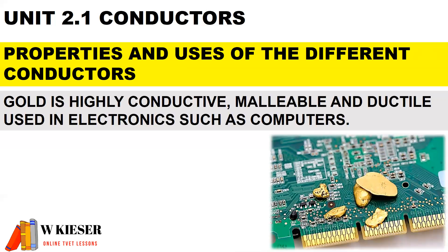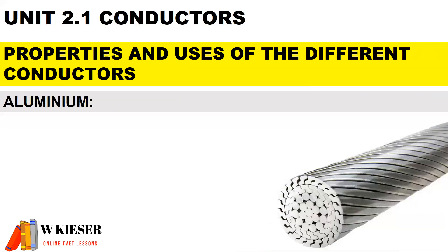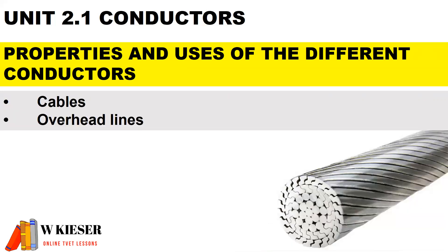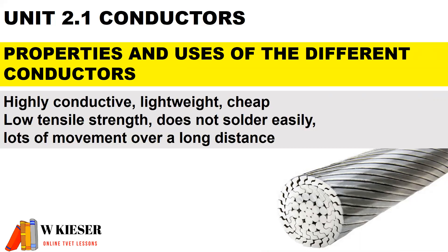For gold, it is highly conductive, malleable, and ductile, and is used in electronics such as computers. For aluminum, it is mainly used in overhead distribution lines. It is highly conductive, lightweight, and cheap.